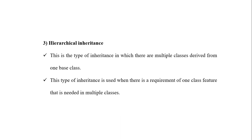Hierarchical inheritance is a type of inheritance in which multiple classes are derived from one base class. There is a single base class, and from that single base class we can derive multiple derived classes — this type of inheritance is called hierarchical inheritance. This type of inheritance is used when there is a requirement for one class's features to be needed in multiple classes.